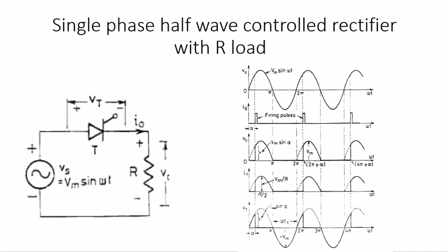Now we are going to see what the holding current is. I can explain using this simple diagram. This is the thyristor, and this is the pulse we are going to see. Current must flow from the positive connection through the thyristor. The holding current means: even if we trigger the thyristor, if the input current flowing is very low, it cannot open the switch and current will not pass. This is what is explained as the holding current.